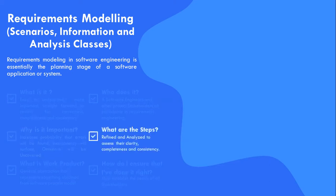Requirements engineering begins with inspection — a task that defines the scope and nature of the problem to be solved. It moves onwards to elicitation, a task that helps stakeholders define what is required, and then elaboration, where the basic requirements are refined and modified.